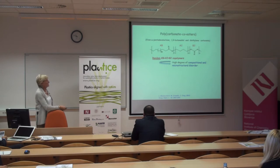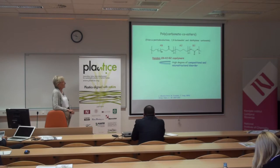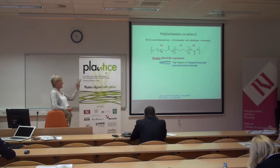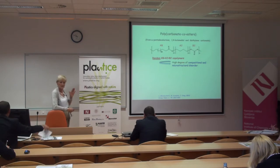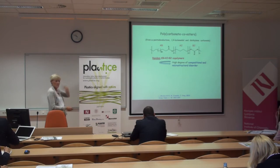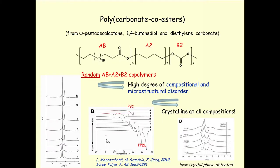As a curiosity, it is also possible to obtain carbonate co-esters. This is a very disordered system from a microstructure perspective: we have an AB monomer (pentadecalactone) combined with A₂ and B₂ monomers, totally randomly distributed along the chain, and the AB unit can be AB or BA. Despite this structural disorder — from which we would not expect high crystallinity — these polymers are all highly crystalline, and we even detected a new, previously unknown crystal phase.